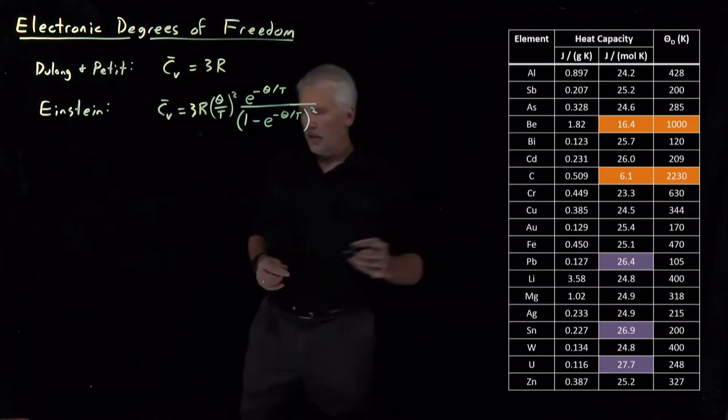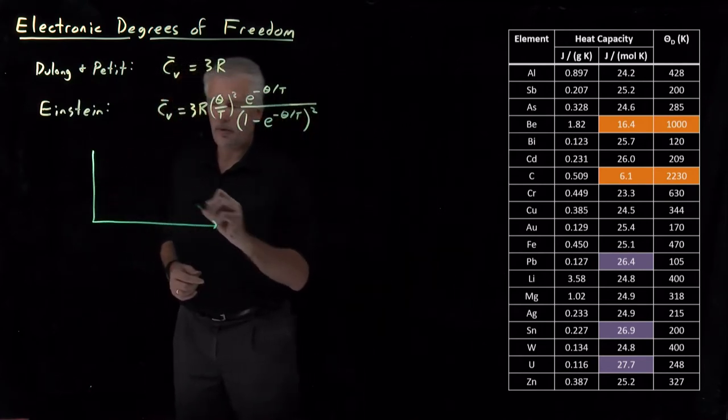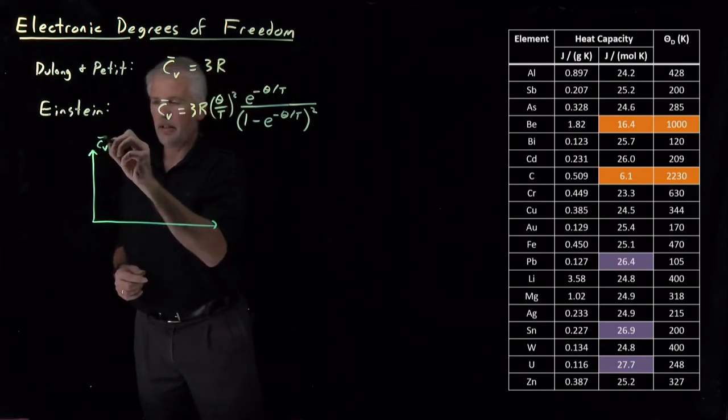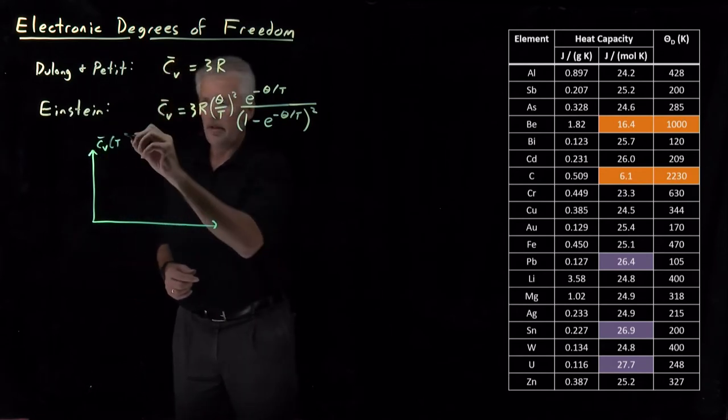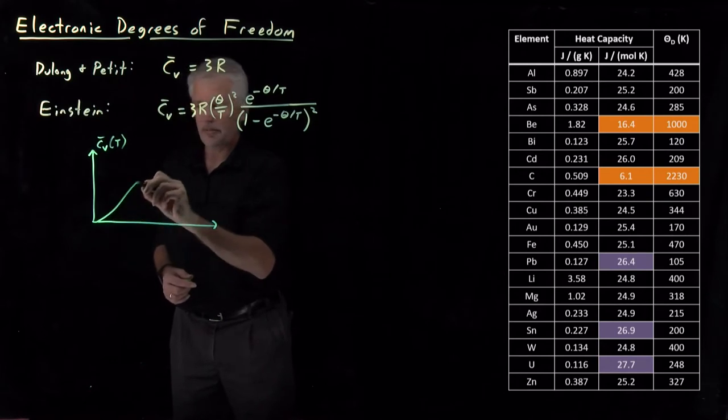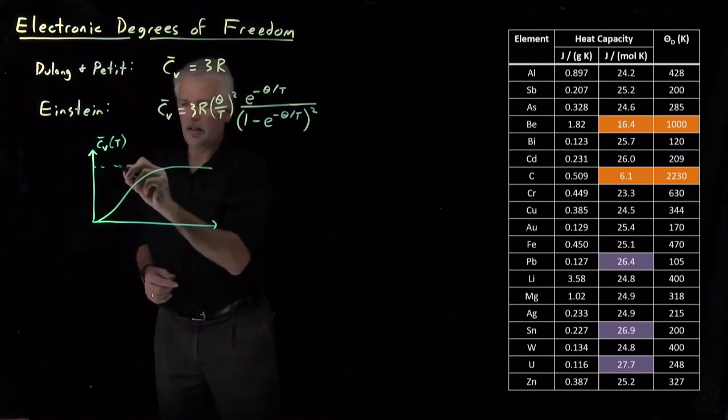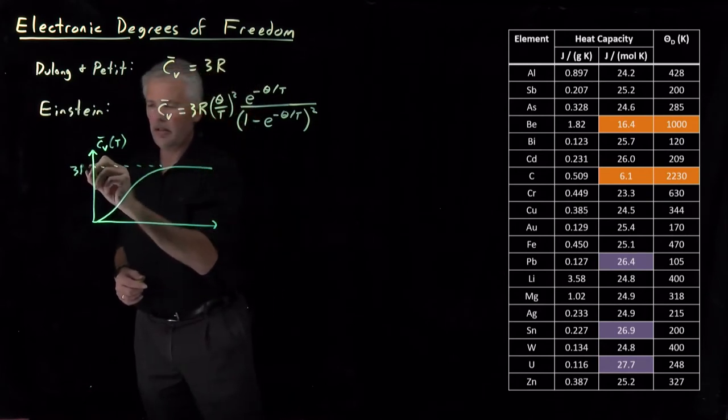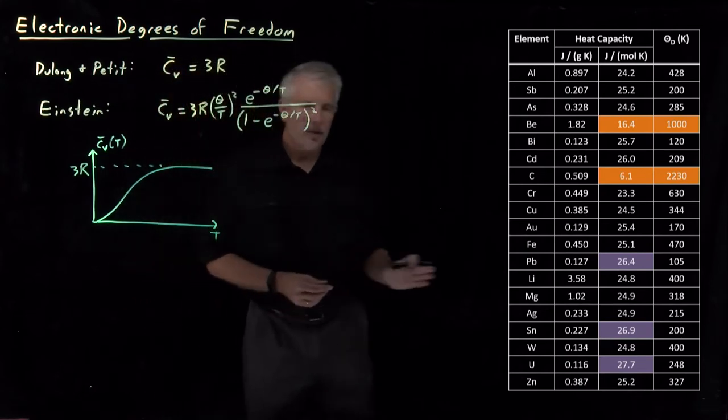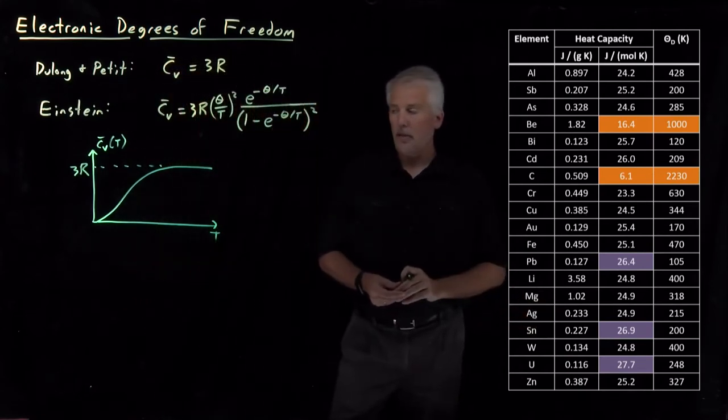So if we have a heat capacity that the Einstein model tells us should asymptotically approach 3R as the temperature increases, how do we explain values that are larger than 3R?